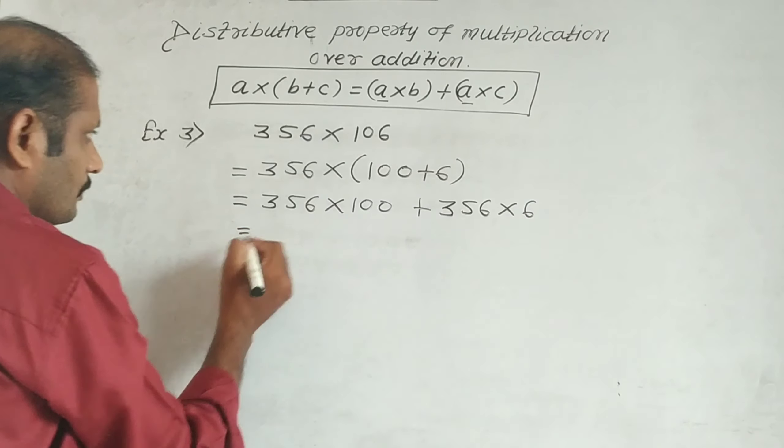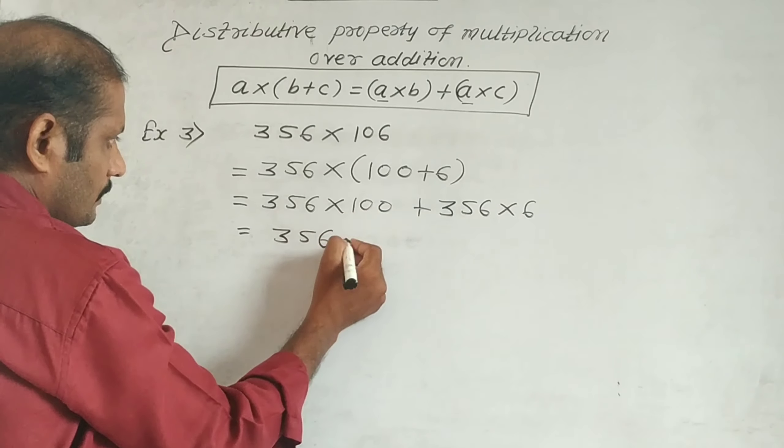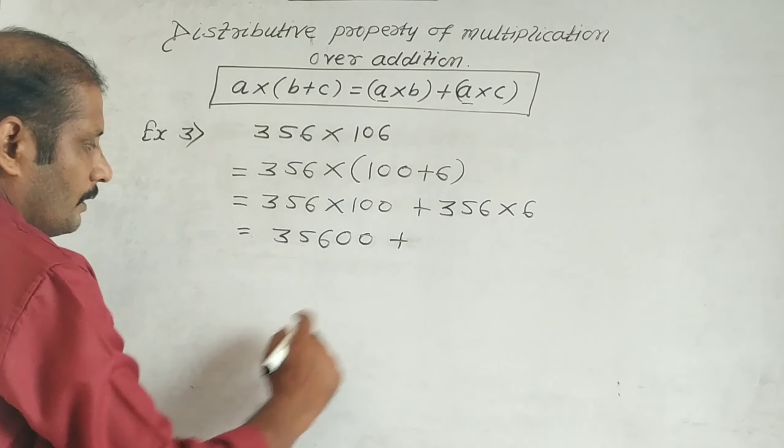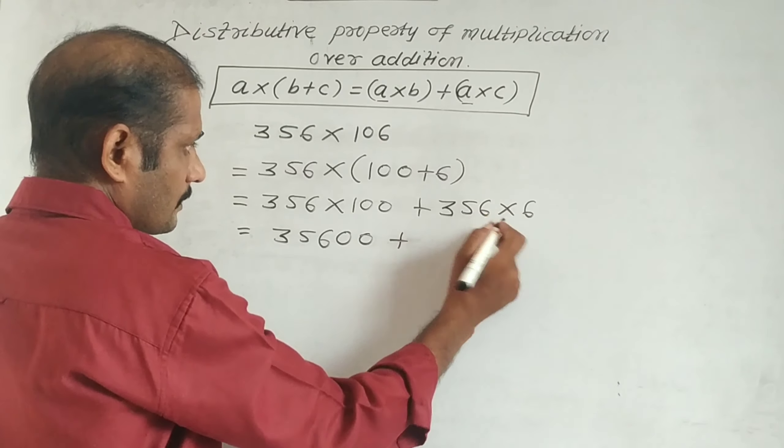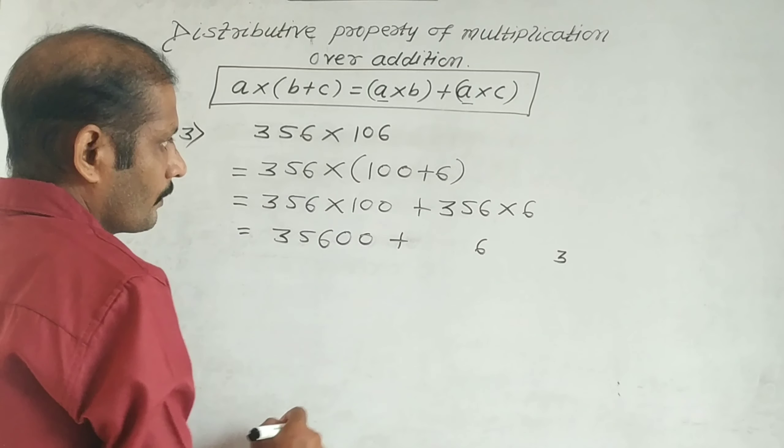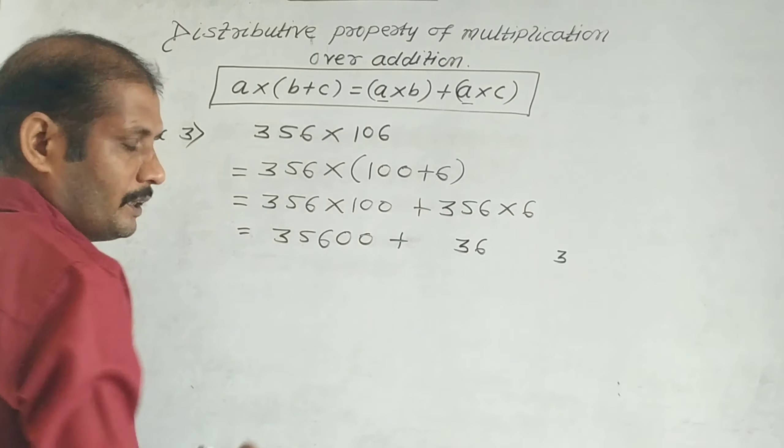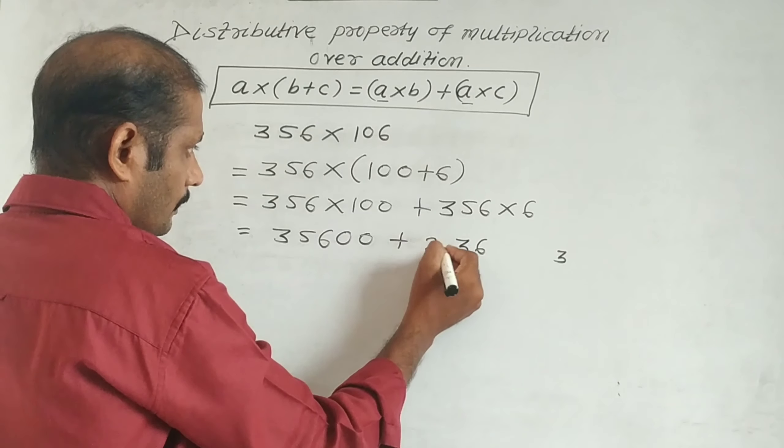356 × 100 first, plus then 356 × 6. This equals... This multiplication is easy: 356, add two zeros = 35,600, plus we multiply here: 6 × 6 = 36, write 6, carry 3. 6 × 5 = 30, 30 + 3 = 33, write 3, carry 3. 6 × 3 = 18, 18 + 3 = 21.